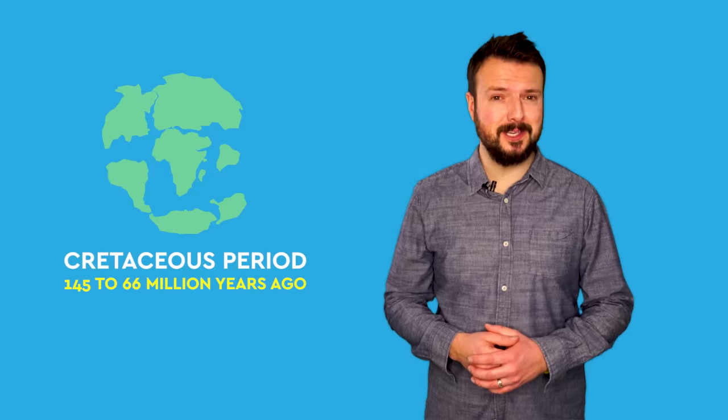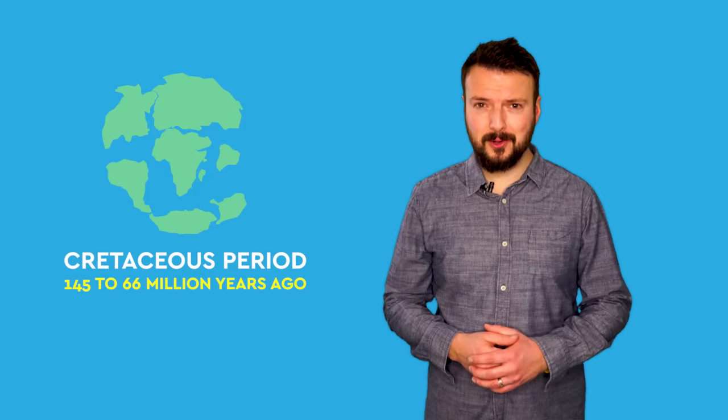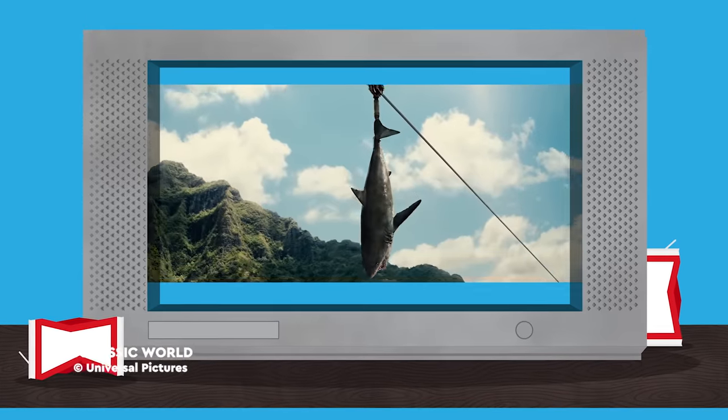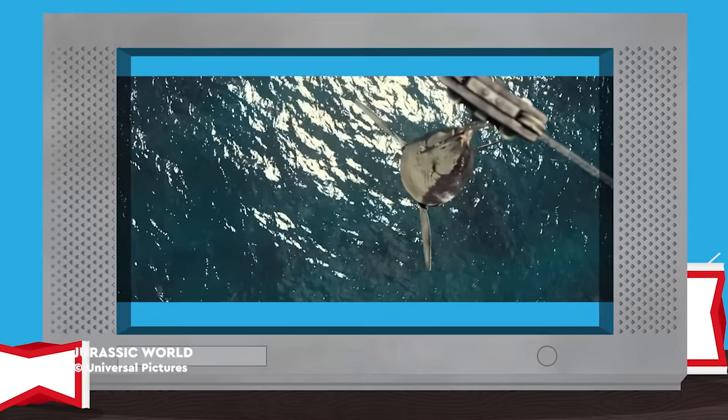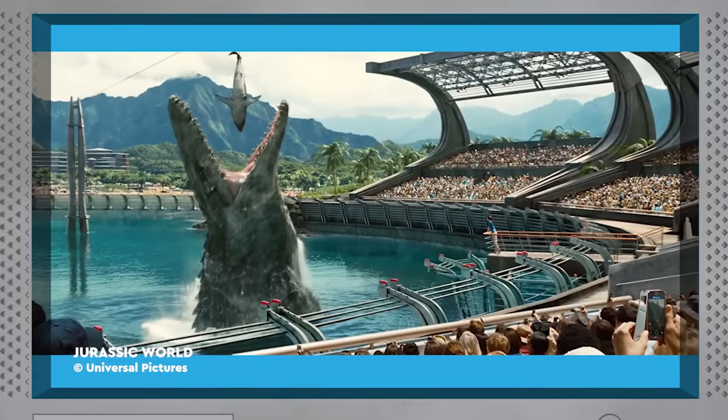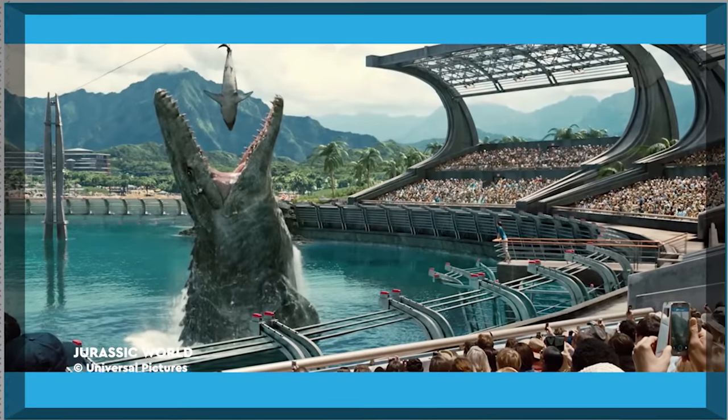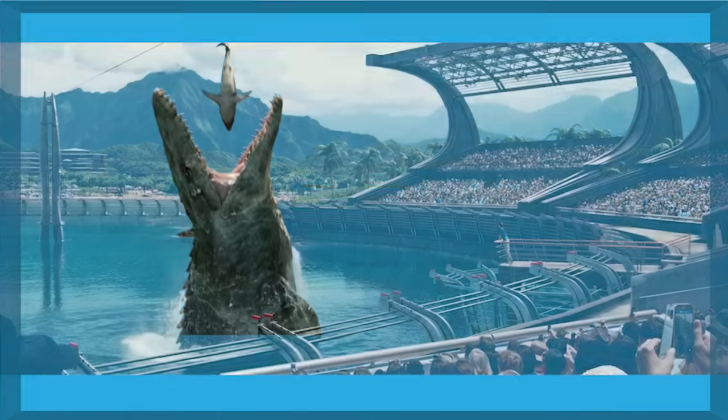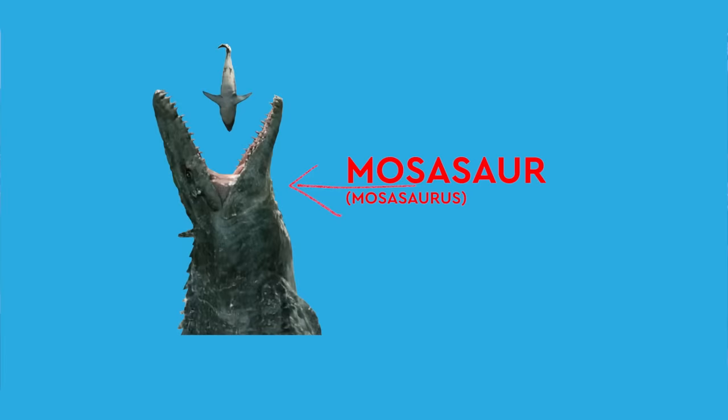So with the ocean providing the best environment for a creature to supersize itself, let's take a look into the deep blue, more specifically the Cretaceous period, to see what competition there would have been. Now, anyone who's witnessed this scene before will surely think that this prehistoric monster offers some competition for a blue whale. That is a Mosasaur, and that is a great white shark serving as an amuse-bouche.